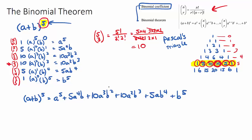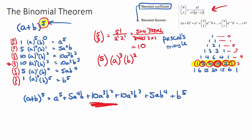For example, a question might ask for the a cubed b squared term. You could realize it would be 5C-something times a to the three times b to the two, and you just need to work out the bottom number — it's either two or three, and you can choose either because 5C3 and 5C2 are the same number. That links to the fact that Pascal's triangle is symmetrical. So you don't need to do the full expansion to find just one term.